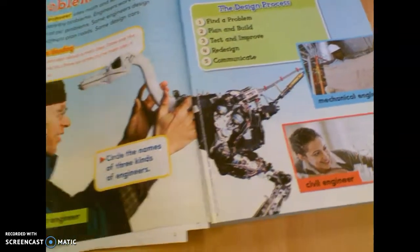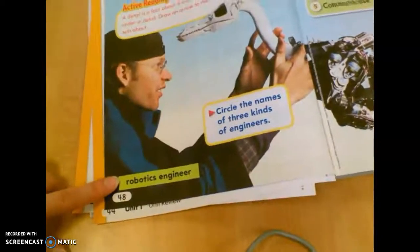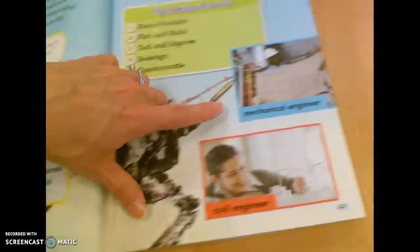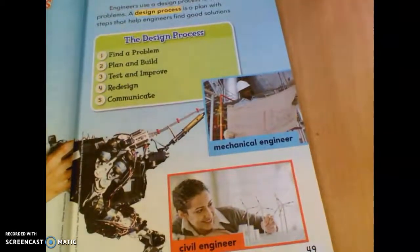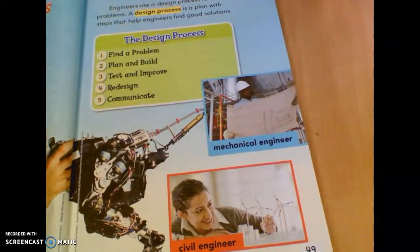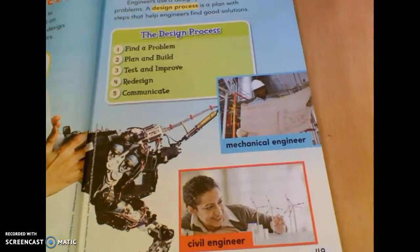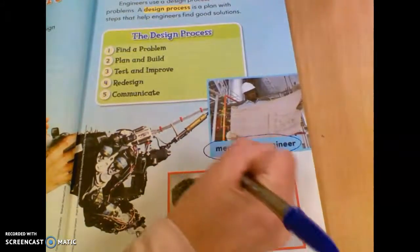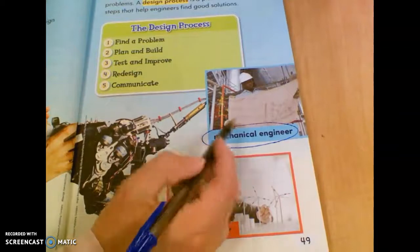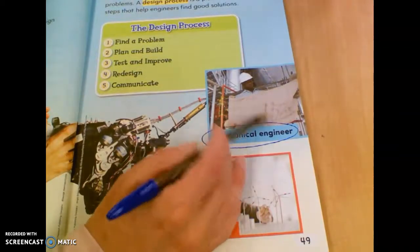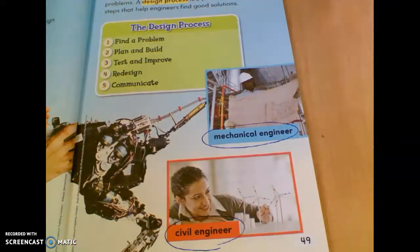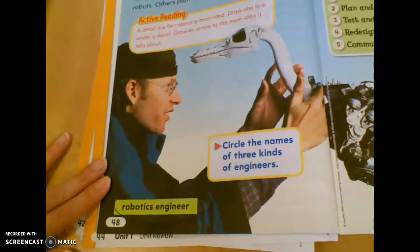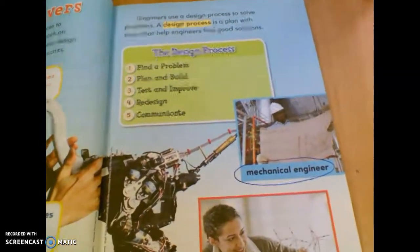If you look at both of these pages, at the bottom there's a robotics engineer, a mechanical engineer, and a civil engineer. On page 48, it says to circle the names of three kinds of engineers. So you're going to circle mechanical engineer — this is someone building maps, that's a civil engineer — and then a robotics engineer. So we have our three types of engineers, and I think we're going to learn a little bit about each one.